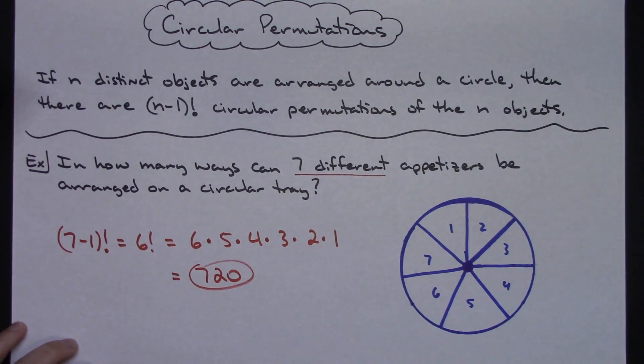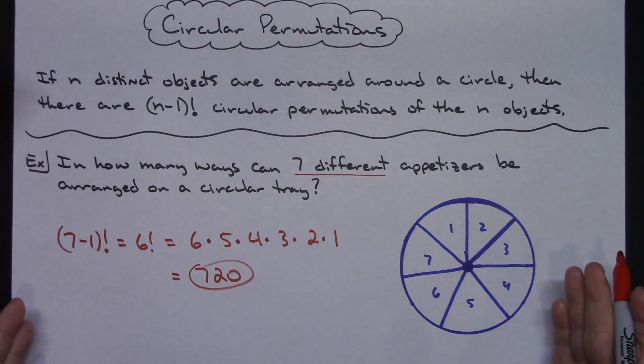So there are seven hundred and twenty distinct ways to arrange the seven different appetizers on a circular tray. Just one real quick example of a circular permutation.